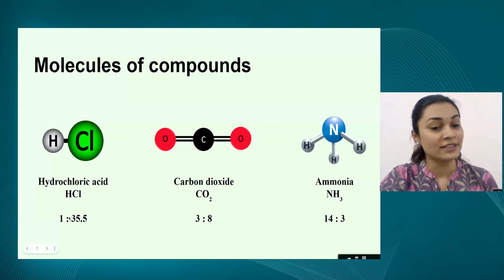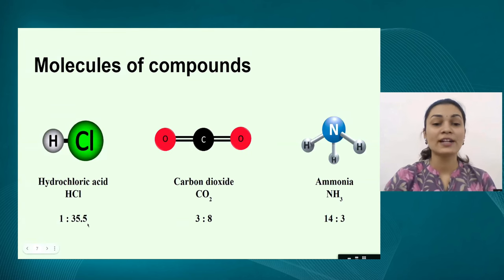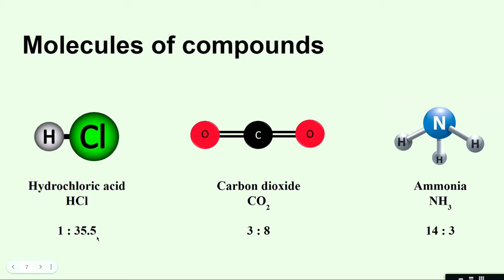The first ratio given below HCl is 1 to 35.5. This is actually the ratio of the masses of the atoms in that molecule. The mass of a hydrogen atom is 1 unit and the mass of a chlorine atom is 35.5, which is the average of all the isotopes of the chlorine atom. If you take the mass ratio of the two atoms, it is always going to be a fixed number. For carbon dioxide, the mass of one carbon atom is 12 and the mass of a single oxygen atom is 16 — so for two oxygen atoms it will be 32.